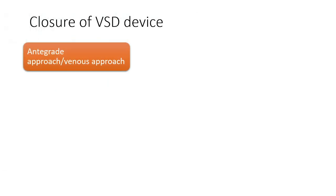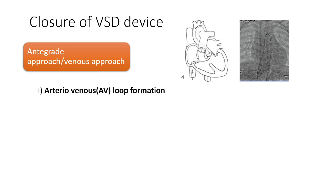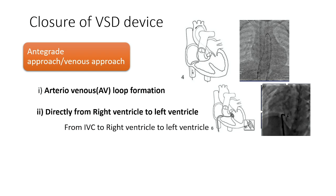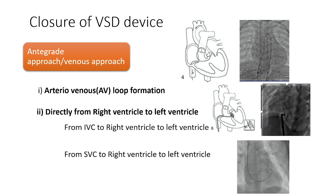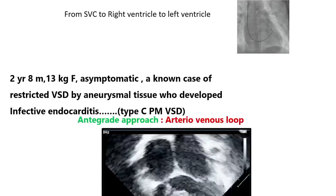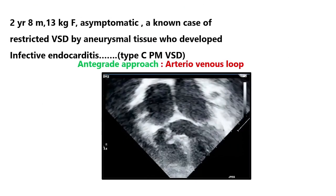In the antegrade approach, we take the delivery sheath through the femoral vein, cross the VSD from the RV side, and deploy the device from the LV side. A few methods are used: one is arteriovenous loop formation; another is directly from the right ventricle to the left ventricle, taking from the IVC or SVC side. This is one case, a two-year eight-month-old child, whom we were following for a small VSD.